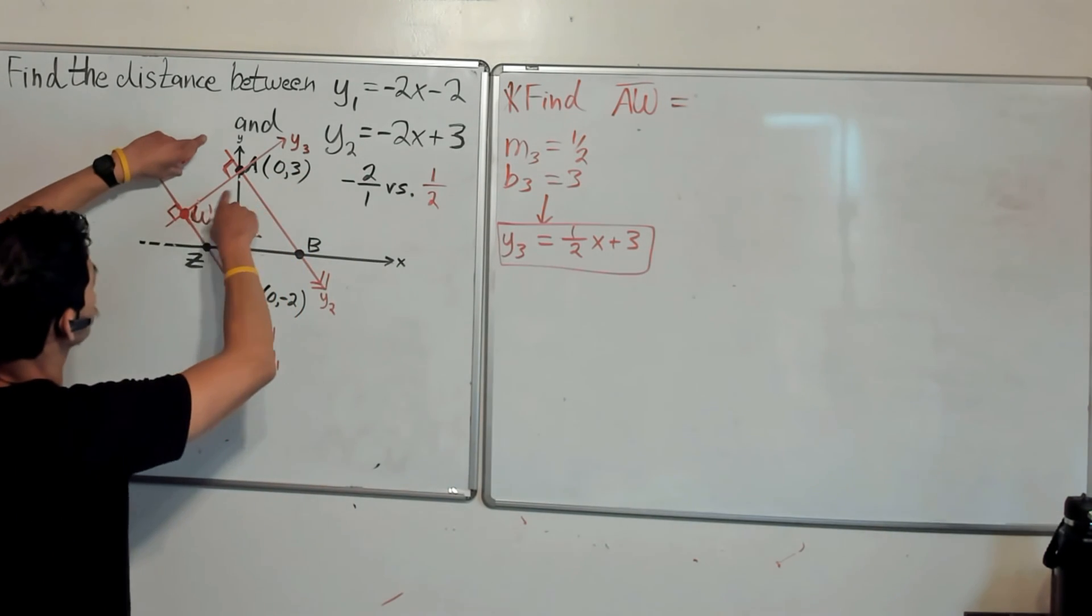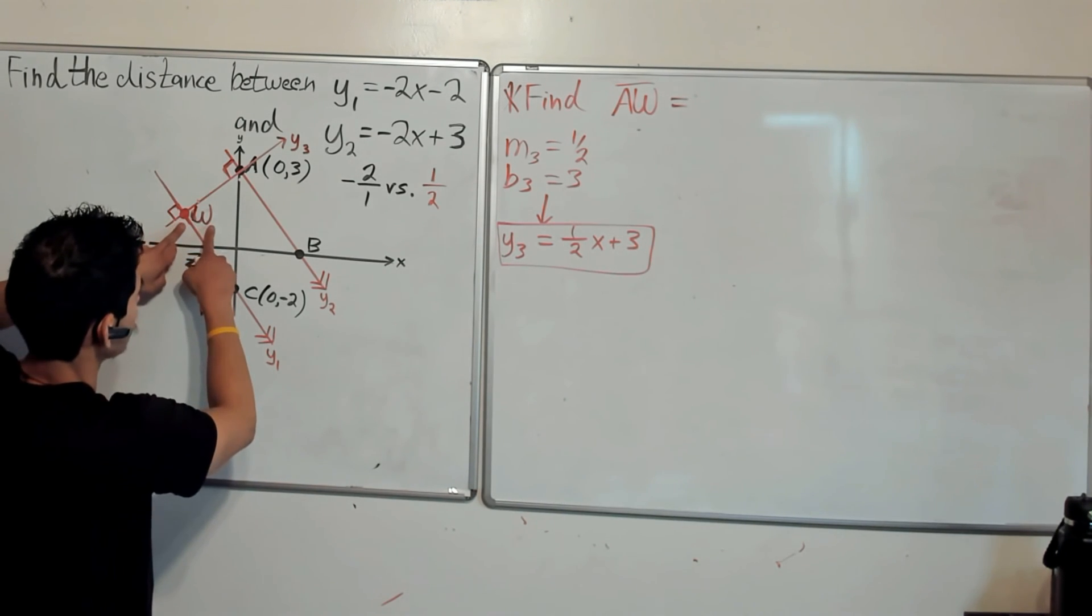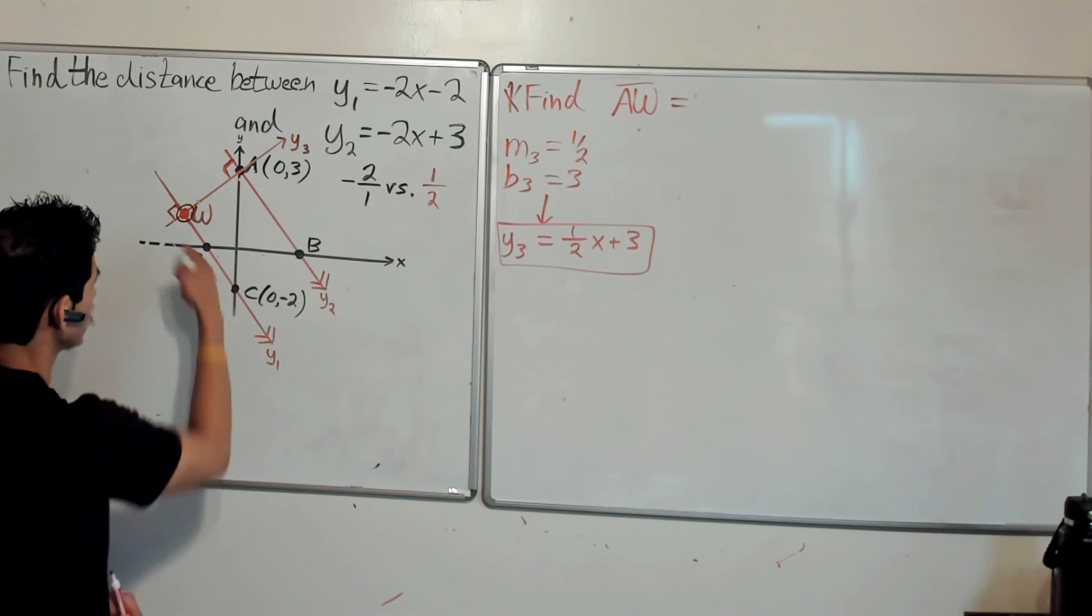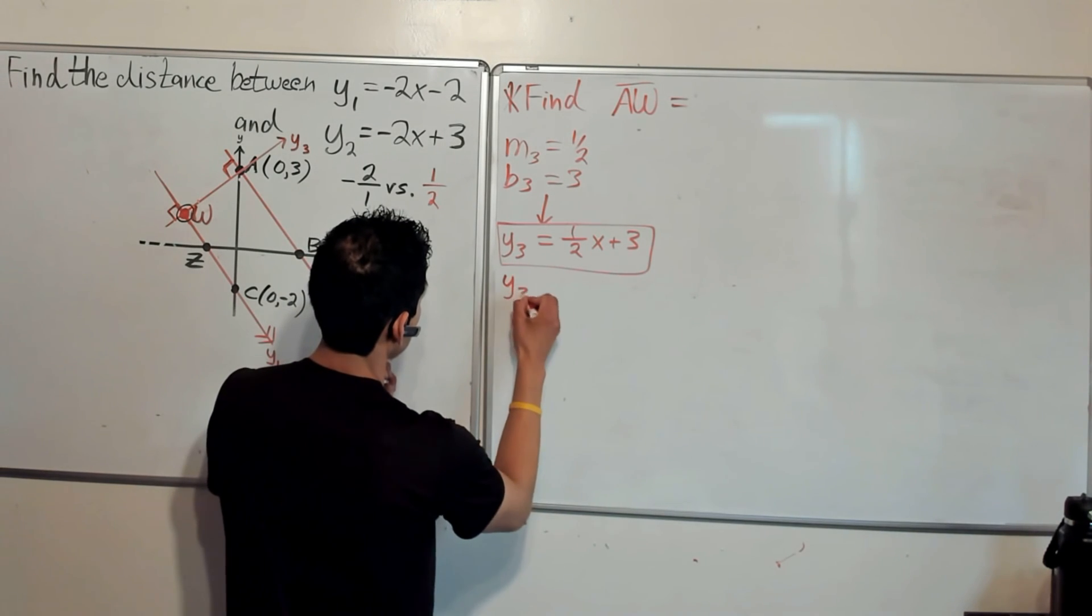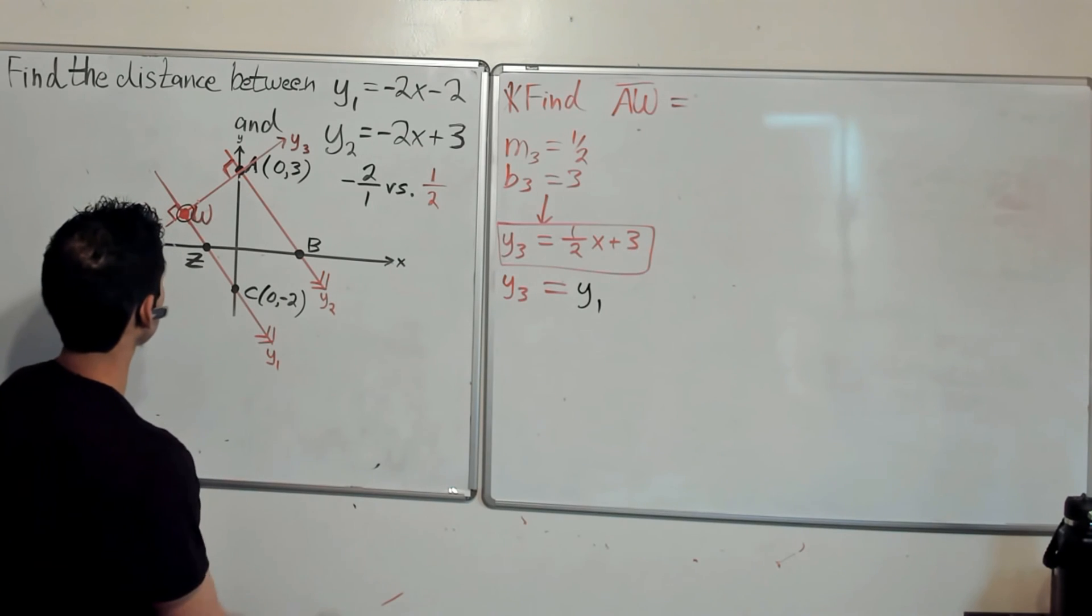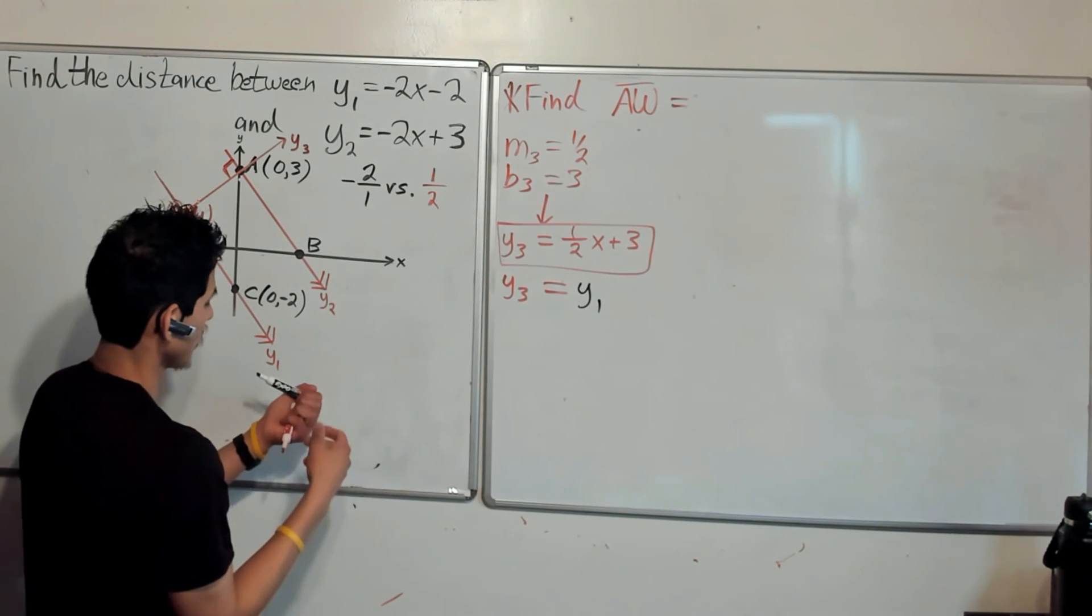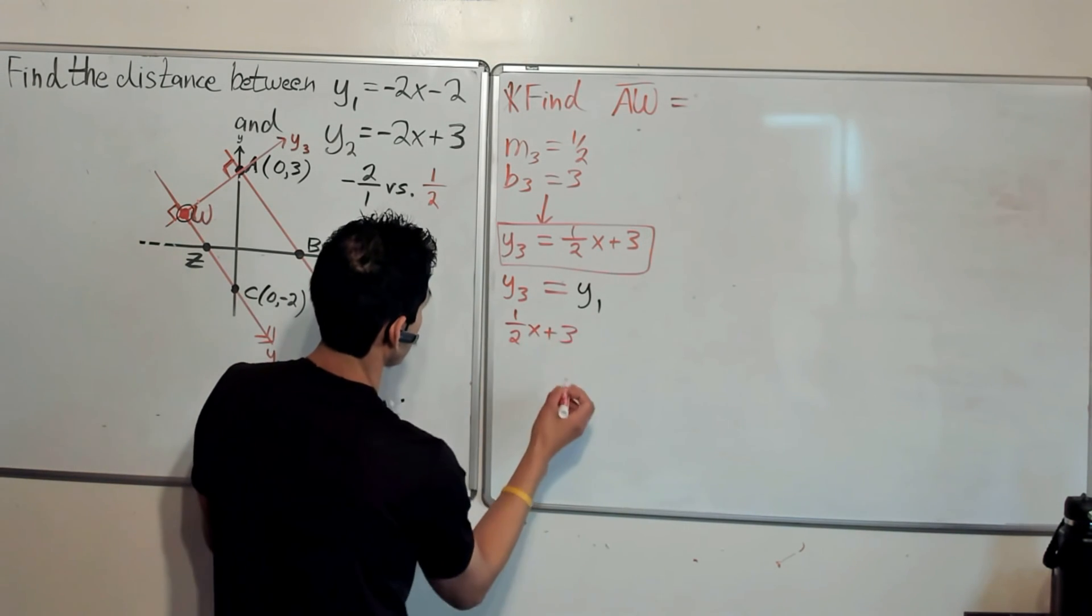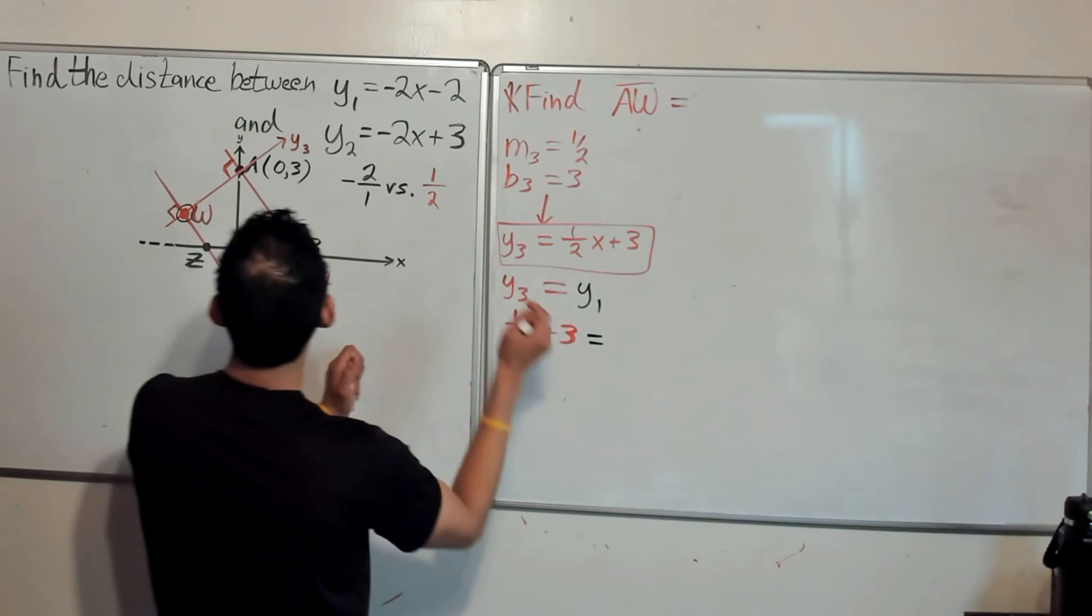We want to now find where y3 intersects y1, because that's going to tell us where the coordinates of W are at. See y3 and y1 intersect at point W. I don't know why I did another dot but you can see it there. So we're going to set y3 equal to y1, and then we solve for x. So we're going to have 1 half x plus 3 equal to the equation for y1 is negative 2x minus 2.